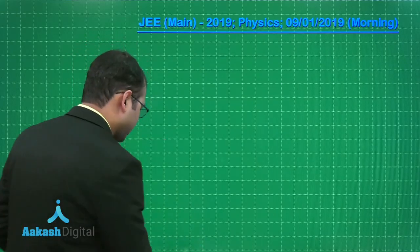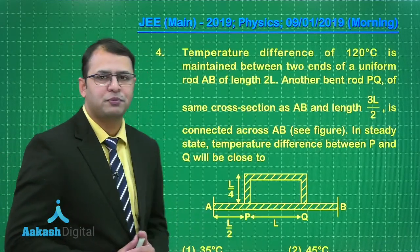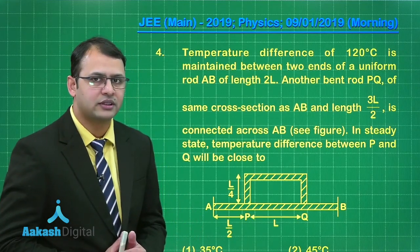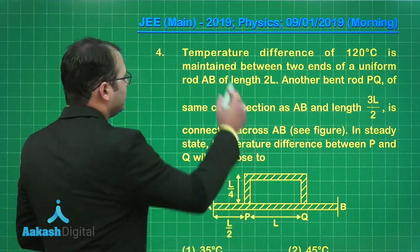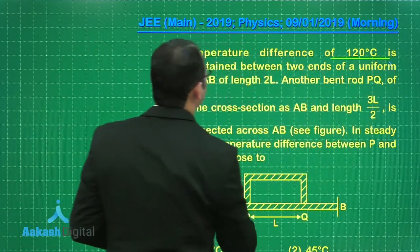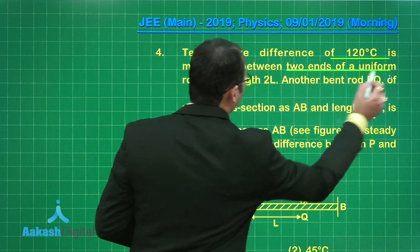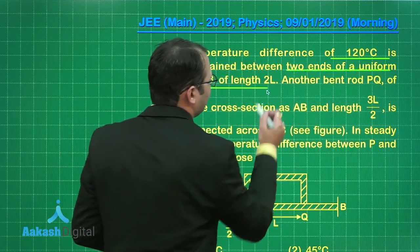Friends, let's take our fourth question. Now, this question belongs to segment heat and thermodynamics. What the question says? Temperature difference of 120 degree centigrade is maintained between two ends of a uniform rod of length AB of length 2L.